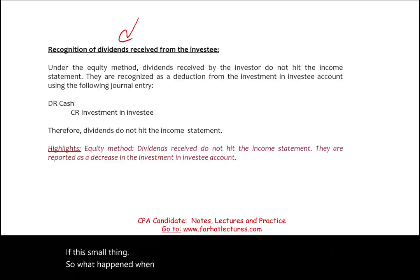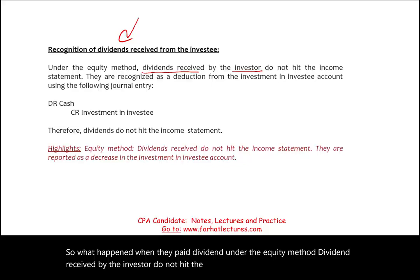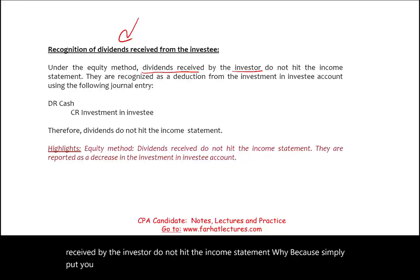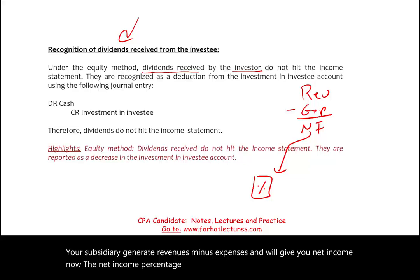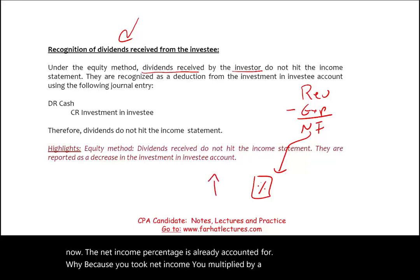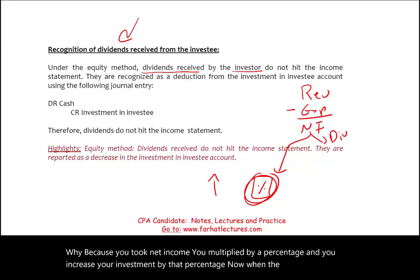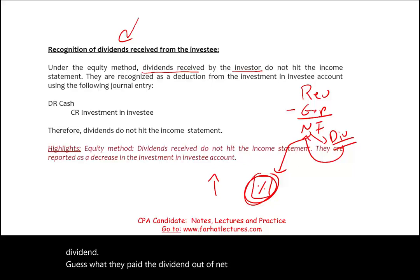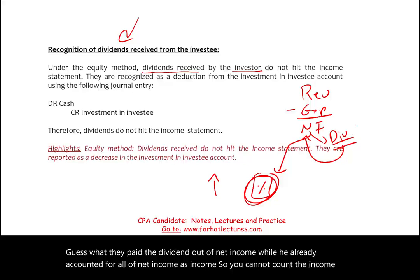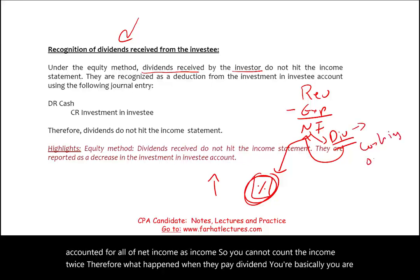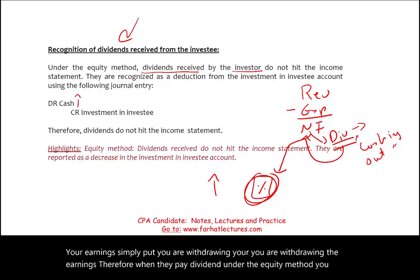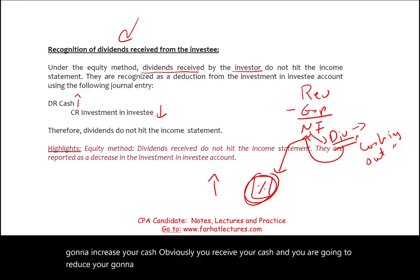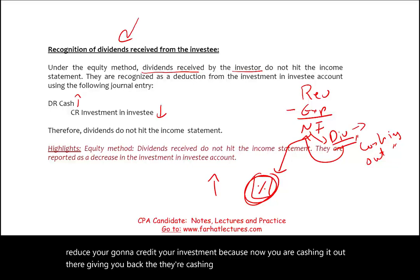Under the equity method, dividends received by the investor do not hit the income statement. Why? Because you already accounted for that dividend — it comes out of net income. Your subsidiary generates revenues minus expenses to produce net income, and you've already recognized your percentage of that net income as income. When the company then pays a dividend out of that net income, you'd be counting income twice. Therefore, when dividends are received, you increase cash and reduce your investment account — you are essentially cashing out your earnings.